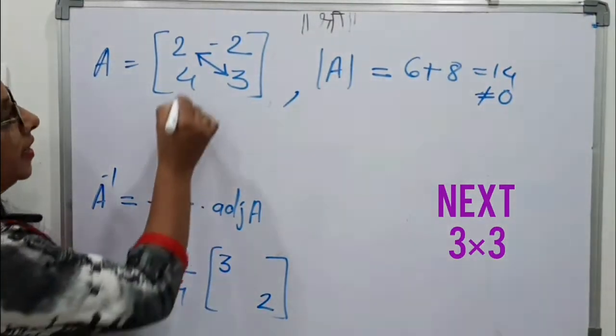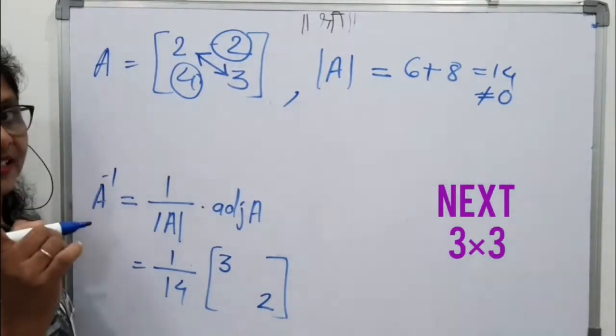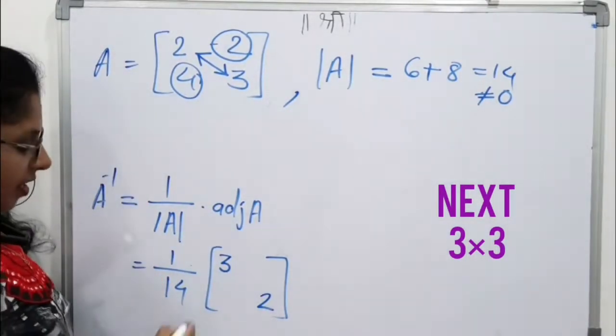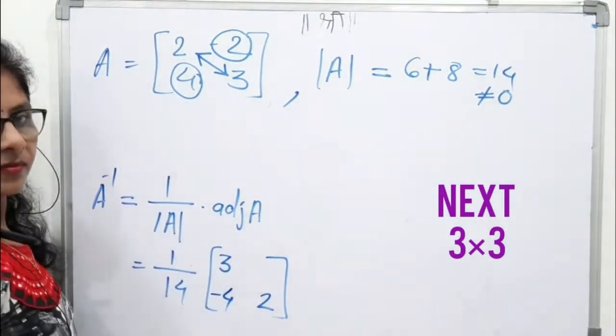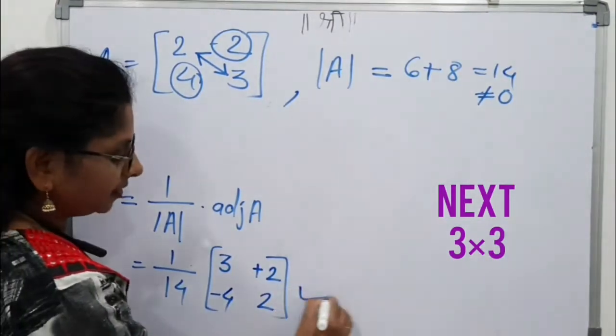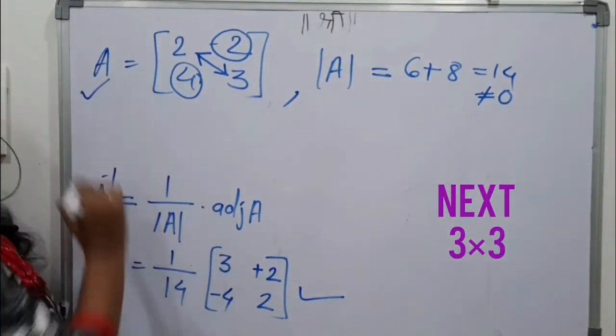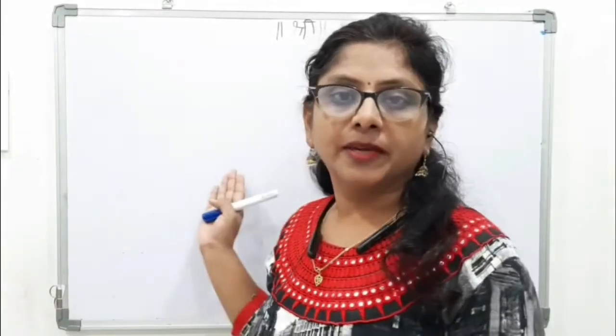Next remaining these two elements only change the signs of them. Means 4 becomes minus 4 and minus 2 becomes plus 2. This is the inverse of this matrix. How much easy and simple. In this way we have found inverse by shortcut method of matrix 2 by 2.